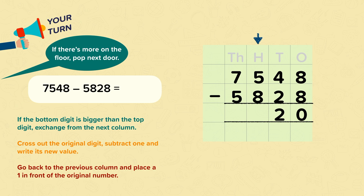Onto the hundreds. I can tell that I'm going to have to exchange here because there's more on the floor: eight is greater than five. We can't take eight away from five, so we pop next door into the thousands column and exchange a thousand for ten hundreds. So we cross out the original value, take away one, and write the new value, so there are now only six thousands. We go back into the hundreds column and add those hundreds we've exchanged, so now instead of having five hundreds we've got fifteen hundreds. Fifteen subtract eight is seven. Then we move on to the thousands column: six subtract five is one. So our answer is one thousand seven hundred and twenty.